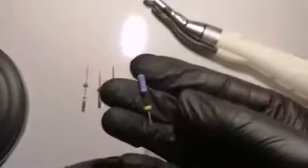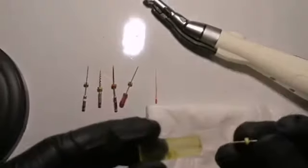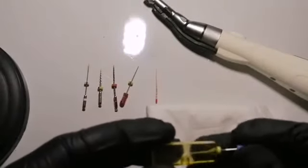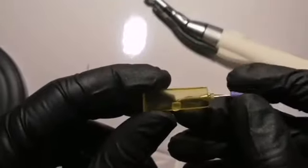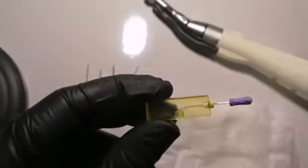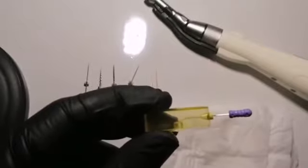Then using the 10k file, which is the stainless steel file, to negotiate the canal, to find the natural pathway of the canal, and to determine the initial working length, which we have previously determined to be 15 millimeters.